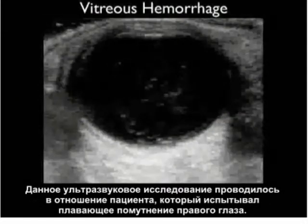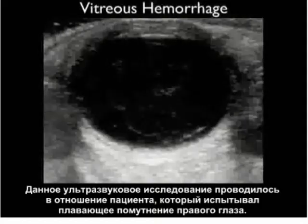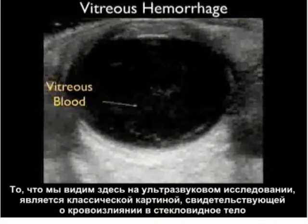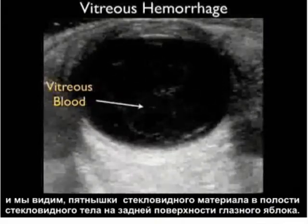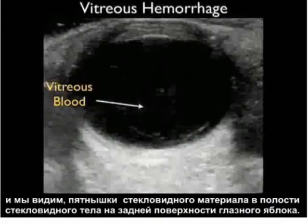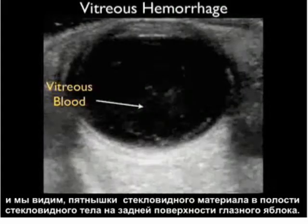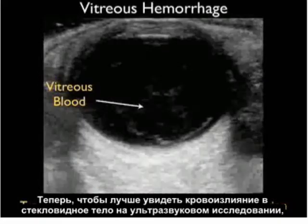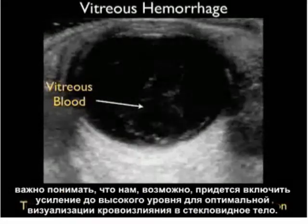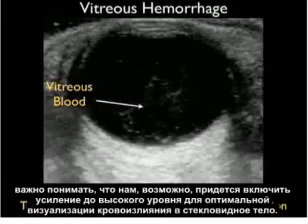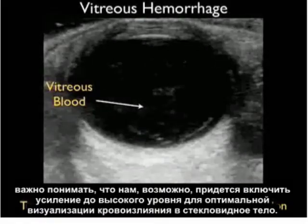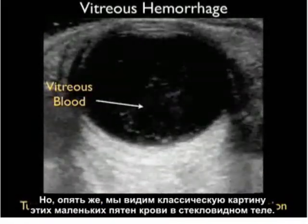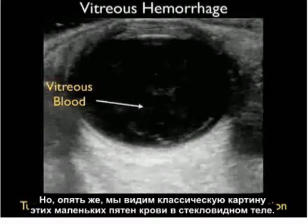This ultrasound was taken from a patient who experienced multiple floaters within their right eye, showing the classic appearance on bedside ultrasound of vitreous blood — speckles of vitreous material within the vitreous cavity in the posterior aspect of the eyeball. To best visualize vitreous hemorrhage on bedside ultrasound, it's important to note that we may have to turn the gain up to a high level for optimal visualization, but we see those classic little speckles of vitreous blood within the vitreous body.